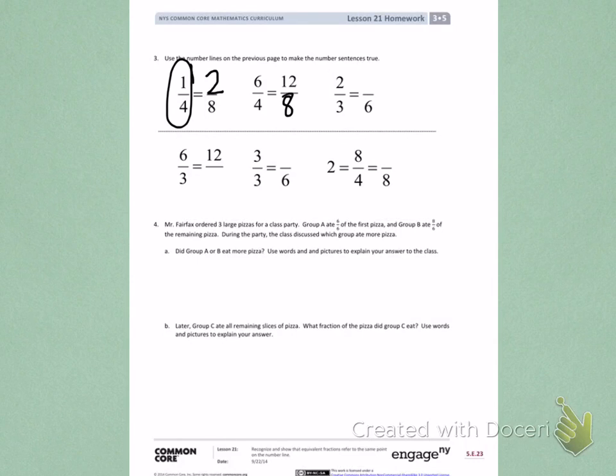You should find the fraction 12 eighths. Look back at the front and find the fraction 2 thirds. Move your finger down the number line and right underneath you should see a fraction with the denominator of 6. Keep flipping your paper back and forth to fill in the missing information for the fractions underneath.